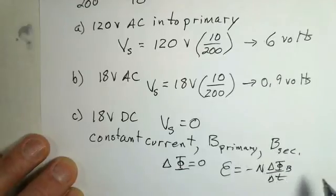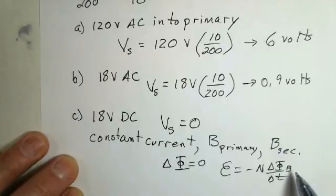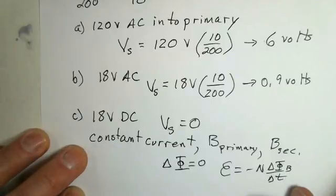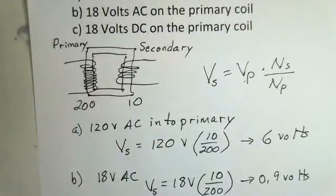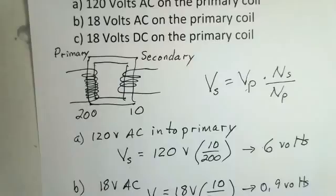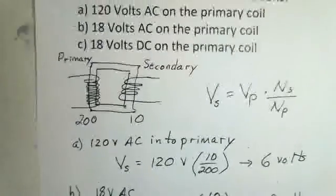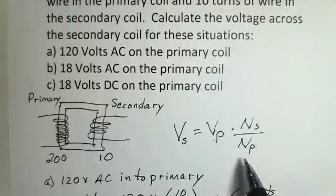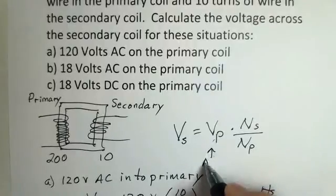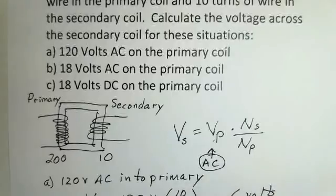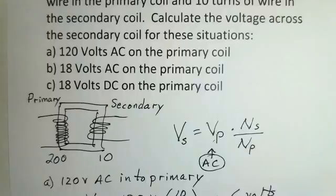In the secondary coil, there is no change of magnetic flux when we're using direct current on the primary. Transformers should only be used with alternating current as an input. That's the way they're designed to work. And that's the only time that you should use this equation. We must have AC voltage being applied to the primary. That's the end of our lesson for today on transformers.